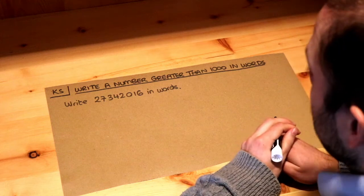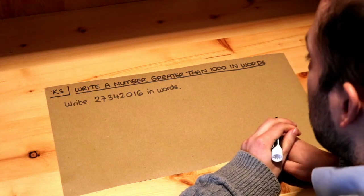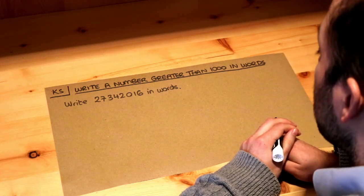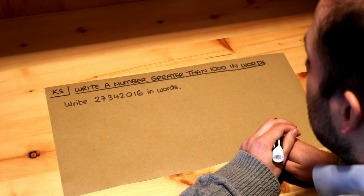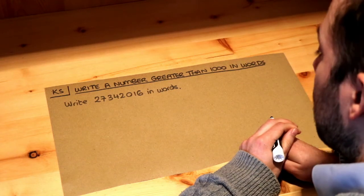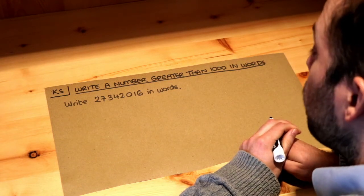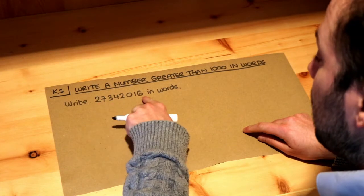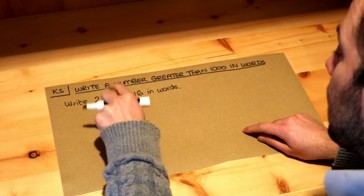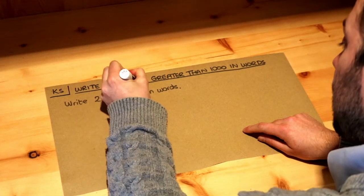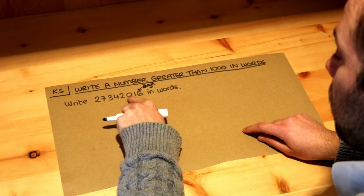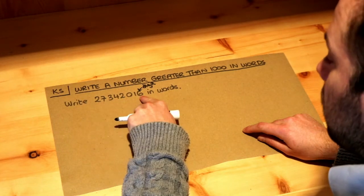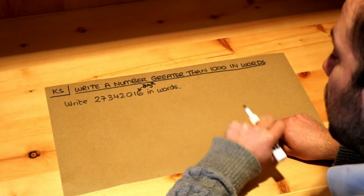Hello and welcome to this Dr Ross Mass key skill video on writing a number greater than a thousand in words. We previously saw how to write a smaller number in words, so we have a number in digits — a digit is just one of the symbols that makes up a number. That's a single digit, that's another digit, etc.